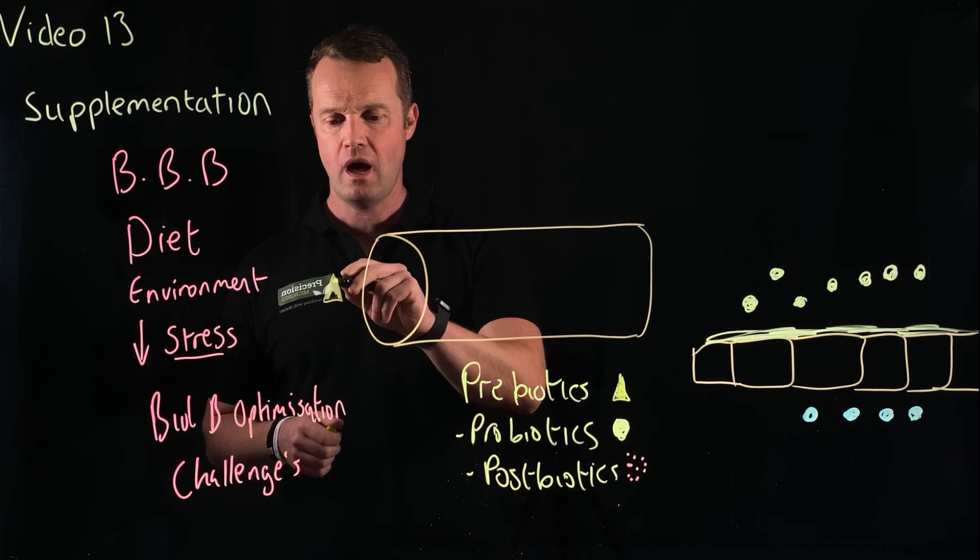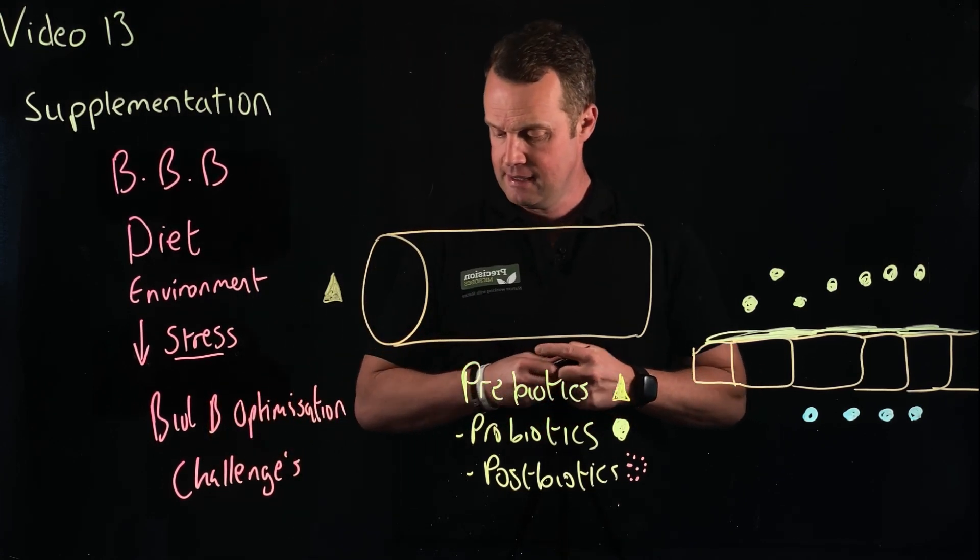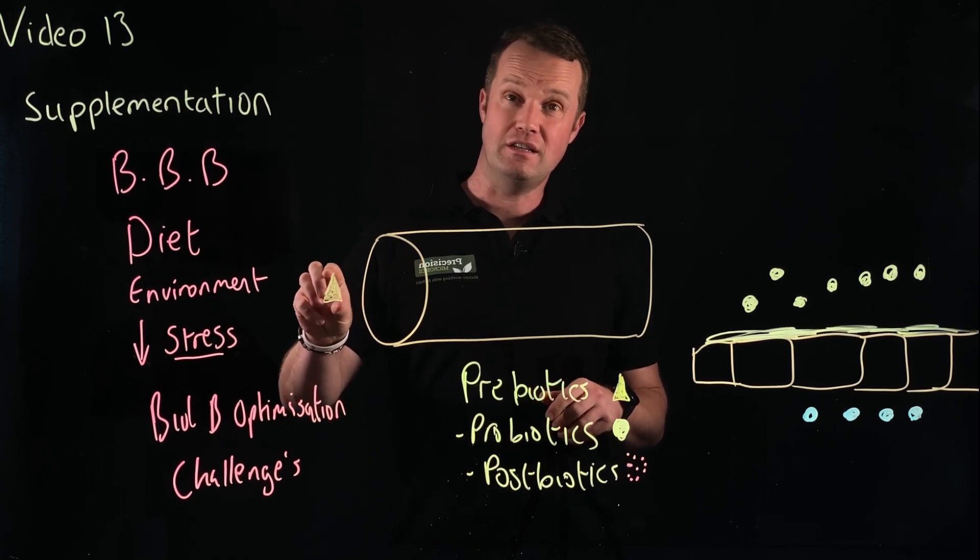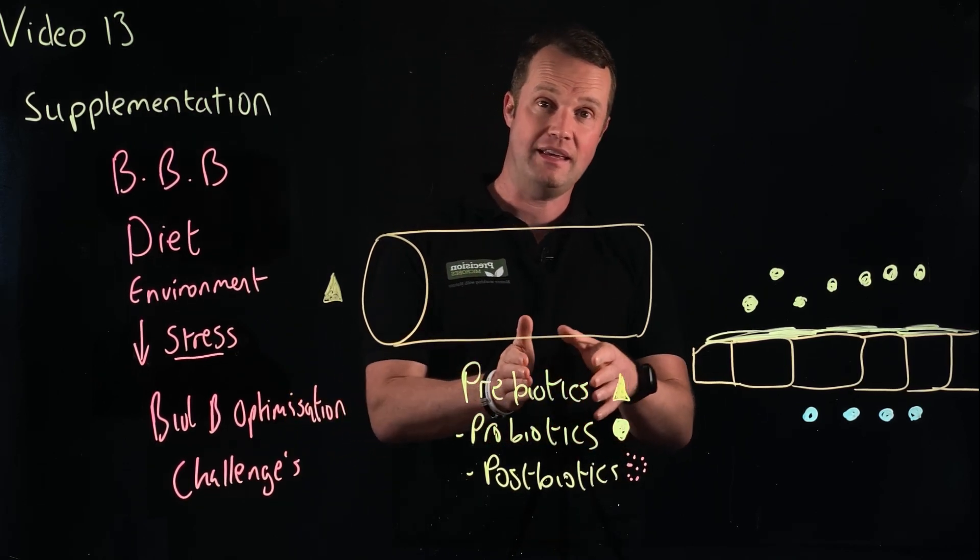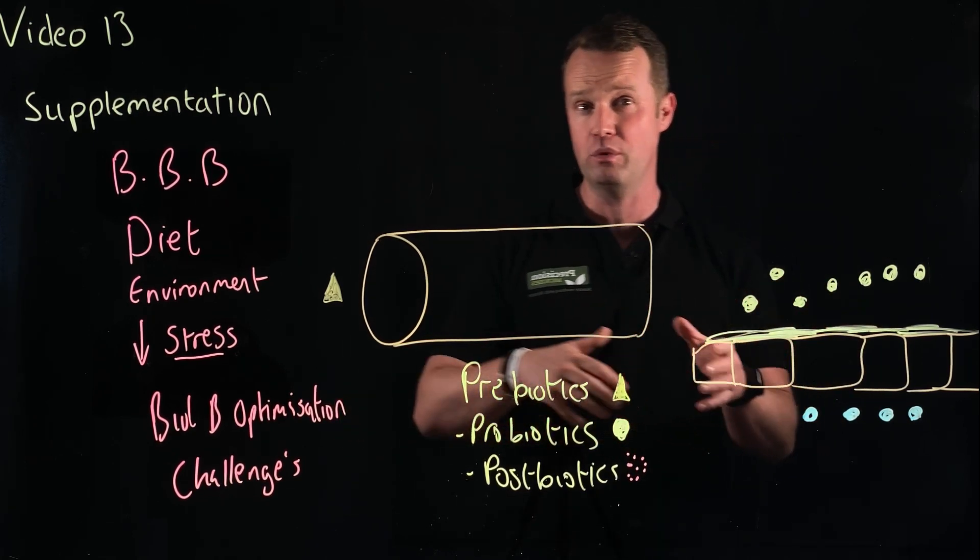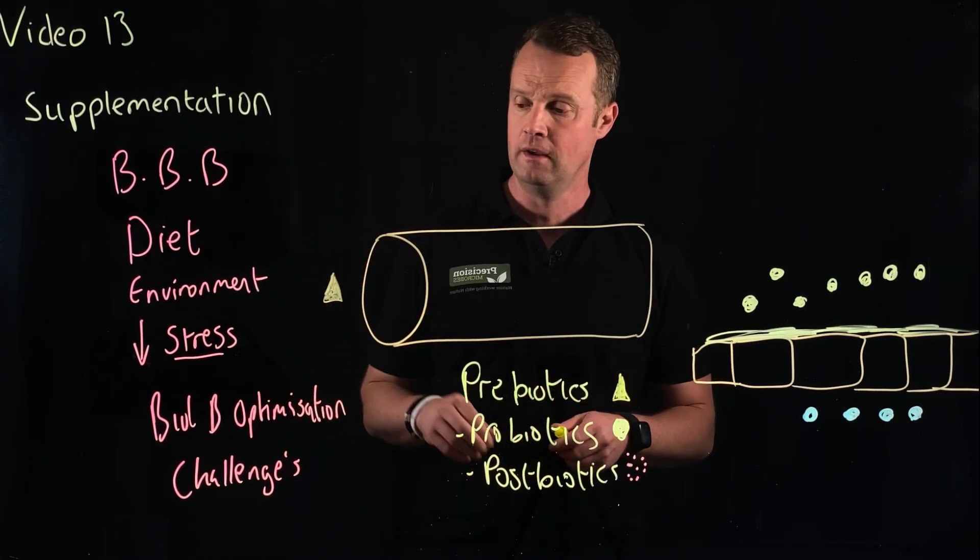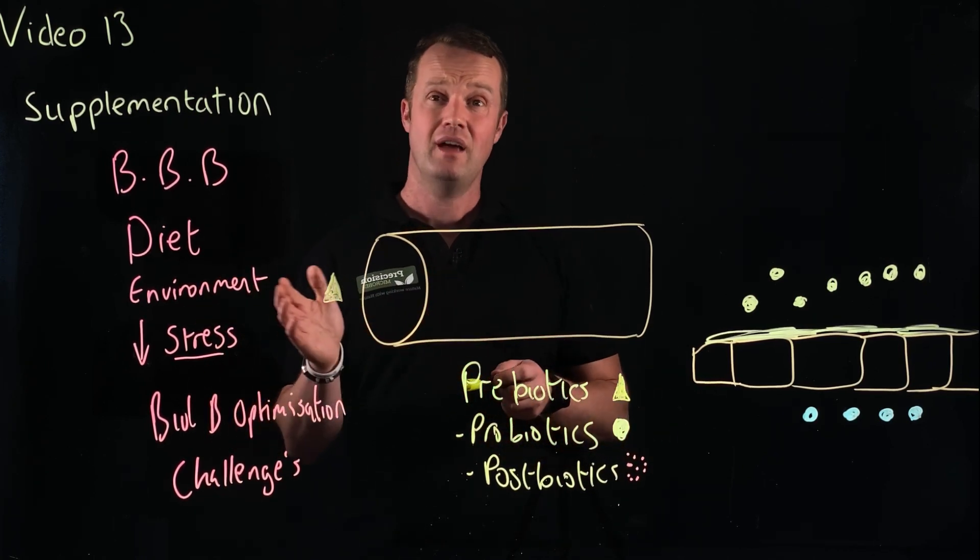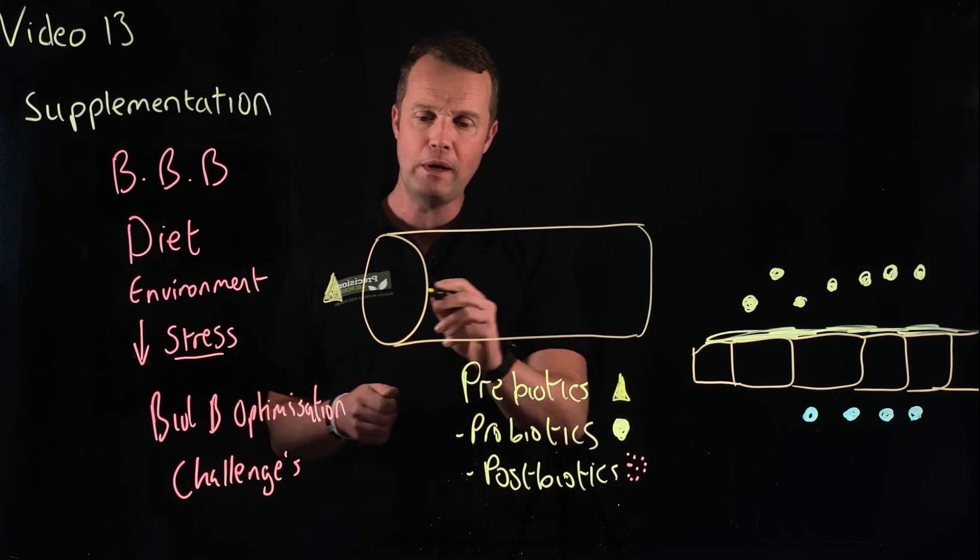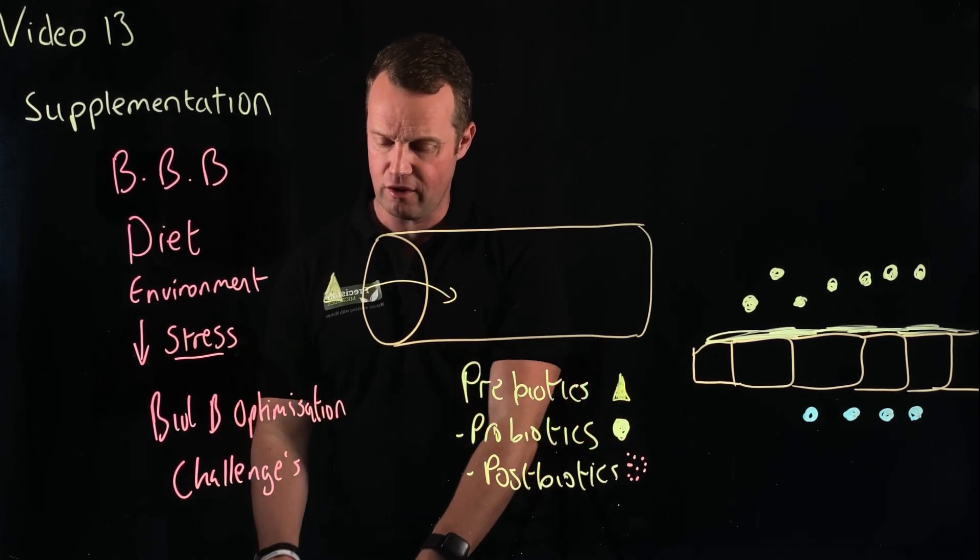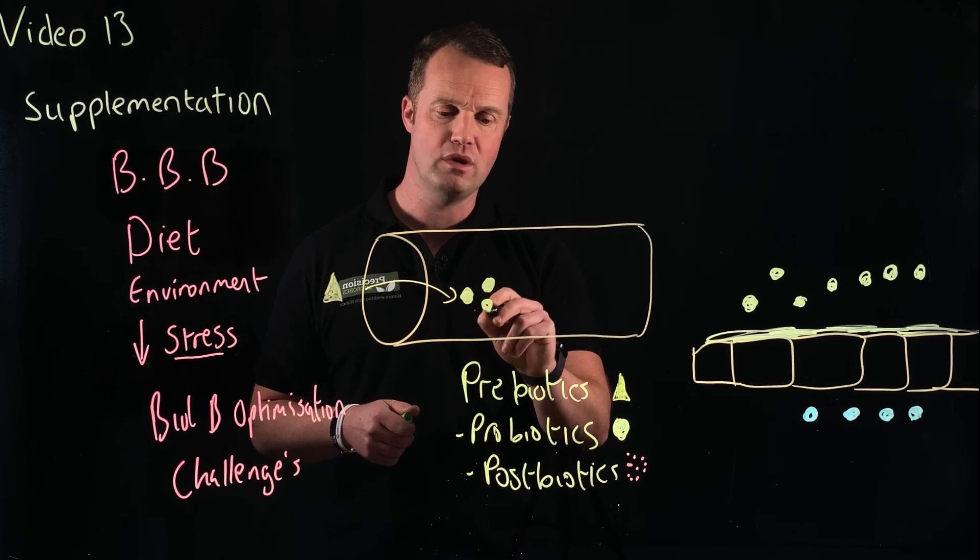When we look at prebiotics, we mentioned in video three how foals develop their microbiome. These non-absorbable sugars, these oligosaccharides that are in colostrum and mare's milk, are actually designed to feed microbes. So prebiotics essentially are a feed for gut microbes. There are definitions in all of these, but essentially, if it's to be defined as such, they have a health benefit. There are lots of different prebiotics—oligosaccharides, mannan, inulin. Essentially, fiber itself and good forage is, to me, a really good prebiotic.